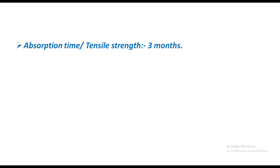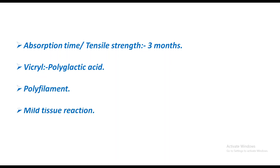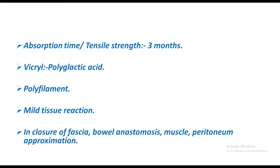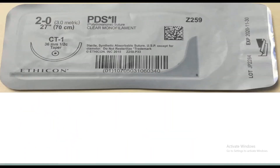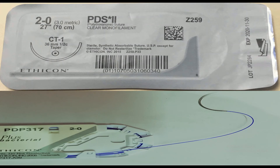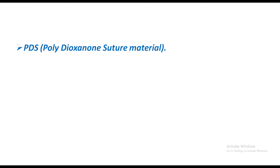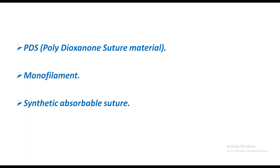Vicryl is purple in color with an absorption time of three months. It is also called polyglactin acid, is polyfilament, causes mild tissue reaction, and is used in closure of fascia, bowel anastomosis, muscle, and peritoneum approximation. PDS is a bluish-colored polydioxanone suture — it is monofilament, synthetic, and absorbable, causing less tissue reaction.